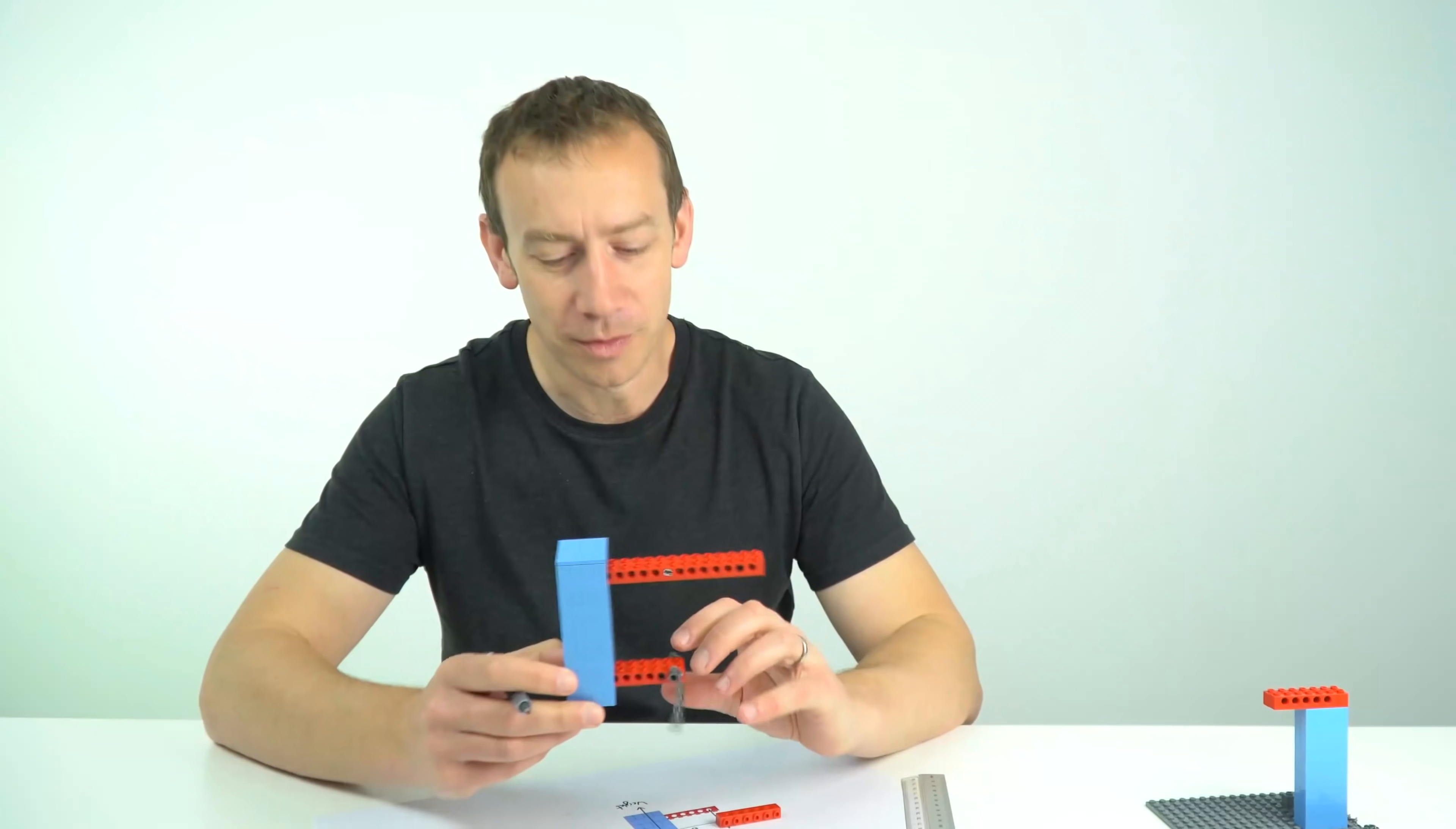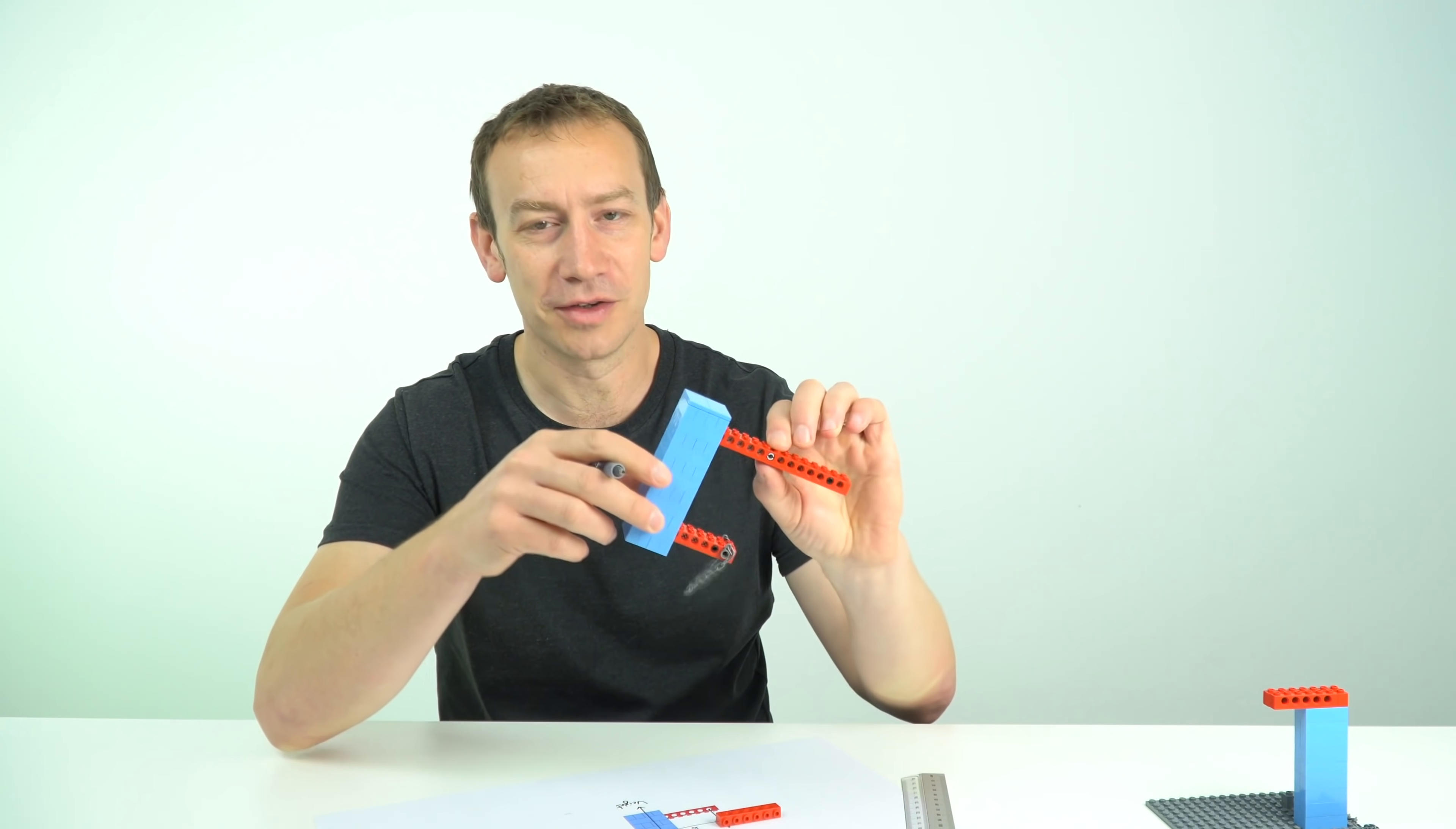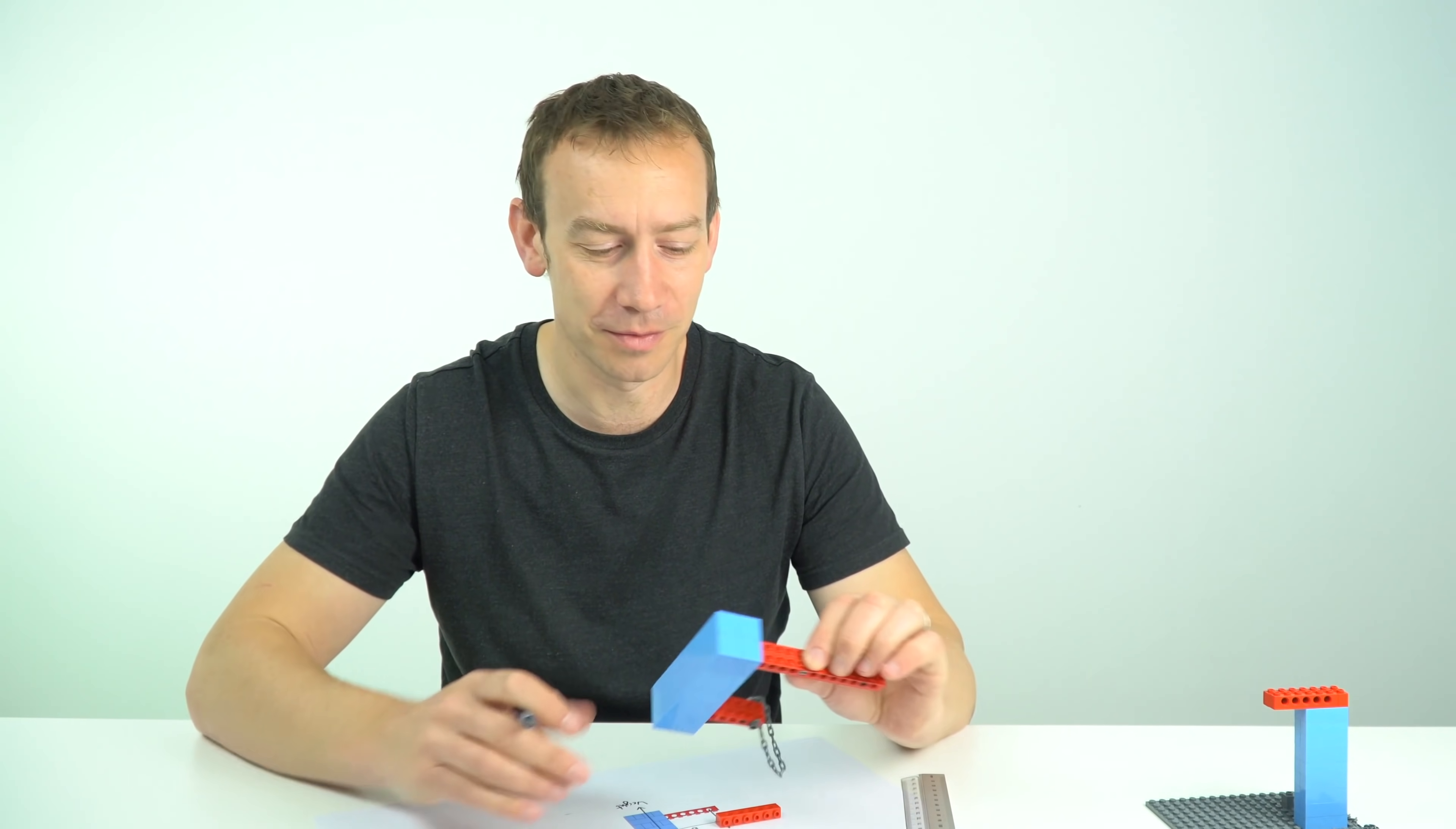And I'm just going to label that distance b on the diagram below. So we've now got the moment which is due to the weight of this object acting at its center of gravity. In this case it's going to be acting clockwise as I see it on the diagram down here.